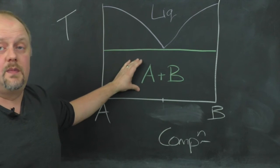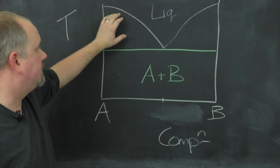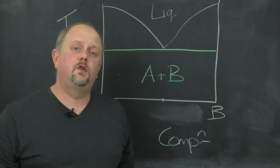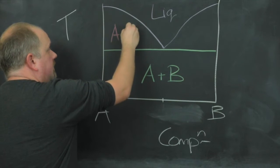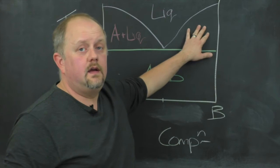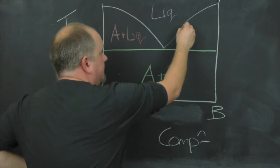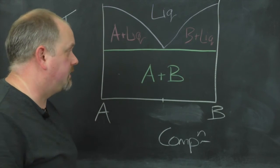Down here we just have a mixture of the two solids, A plus B - there's no reaction between them. But in here we call this the primary phase field of A, so in this region we have A plus liquid. Over here we have the primary phase field of B, so we have B plus liquid.